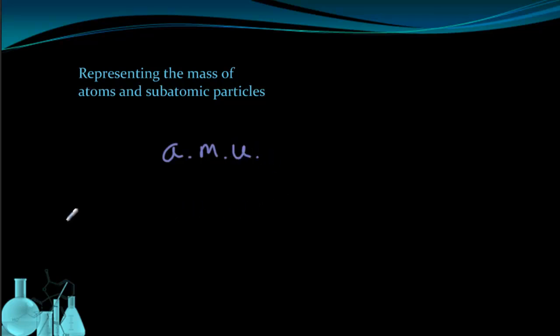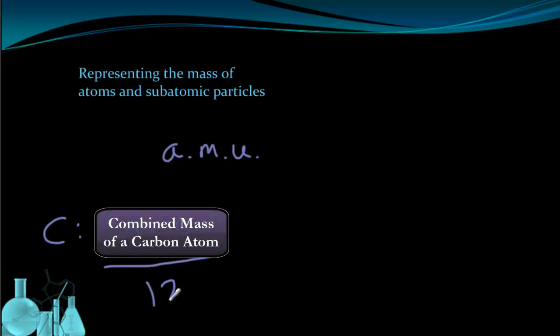The value of one AMU is derived from looking at an atom of carbon which has 6 protons and 6 neutrons. So we took the mass of a single atom of carbon and then divided that by 12, 12 because that's a combined number of protons and neutrons. So they set that value equal to one AMU.